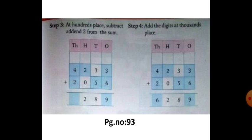So this is the concept of missing digits. So we subtract from addend 1 and addend 2. Ok children.